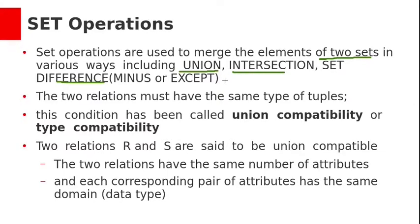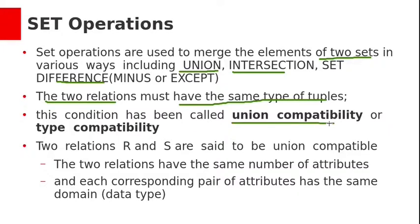In the previous class, we have seen Cartesian product. Today we will see the other three operations: union, intersection, and set difference. To apply these set operations, the two relations must have the same type of tuples. This condition is called union compatibility or type compatibility.